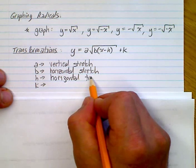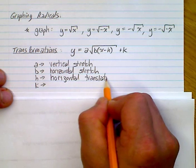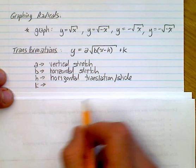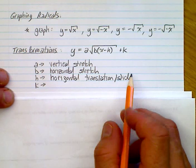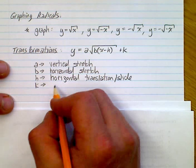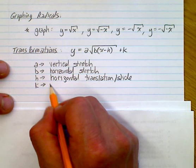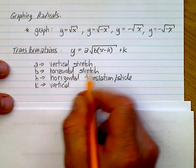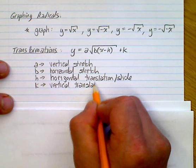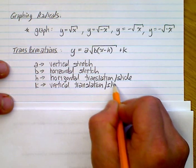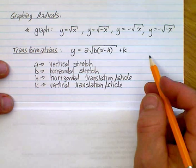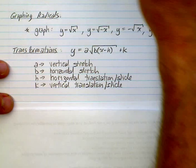Remember the opposite rule for b: if b = 2, it's a compression by a half; if b = 1/2, it's an expansion by 2. The 'h' is a horizontal translation — a slide. If it's x + 2, you go left 2; if it's x - 2, you go right 2. The 'k' at the end is a vertical translation — the easiest of all: plus 2 goes up 2, minus 2 goes down 2.